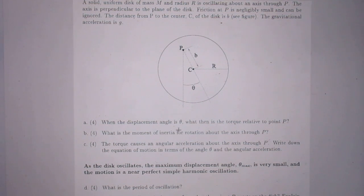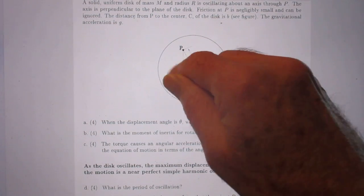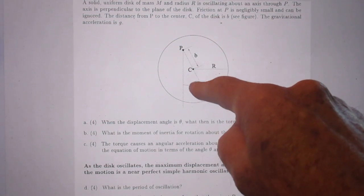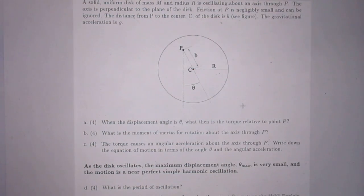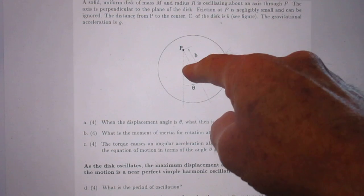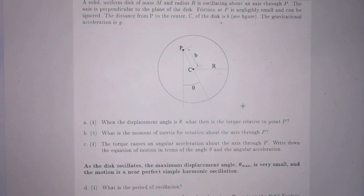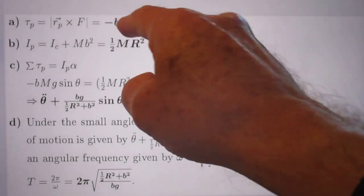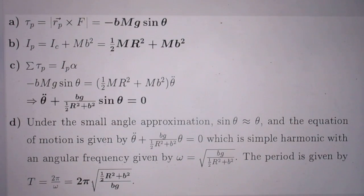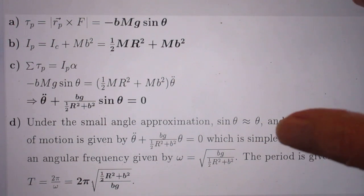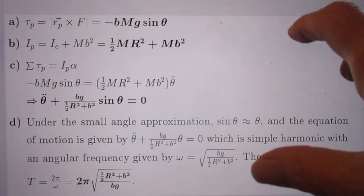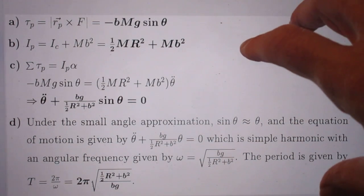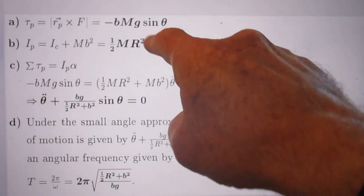First question: When the displacement angle is theta, what then is the torque relative to point P? It is the cross product between two vectors. One vector from C to P, which has magnitude B, and one vector mg, which is vertically down to C. However, if you remember your cross products, you must multiply this by the sine of theta. Let's take a look. Here you see the cross product. The minus sign tells you that it is a restoring torque. We move the disk over an angle counterclockwise. And then the torque will move it clockwise. So here you see the minus B sine theta and here you see F.